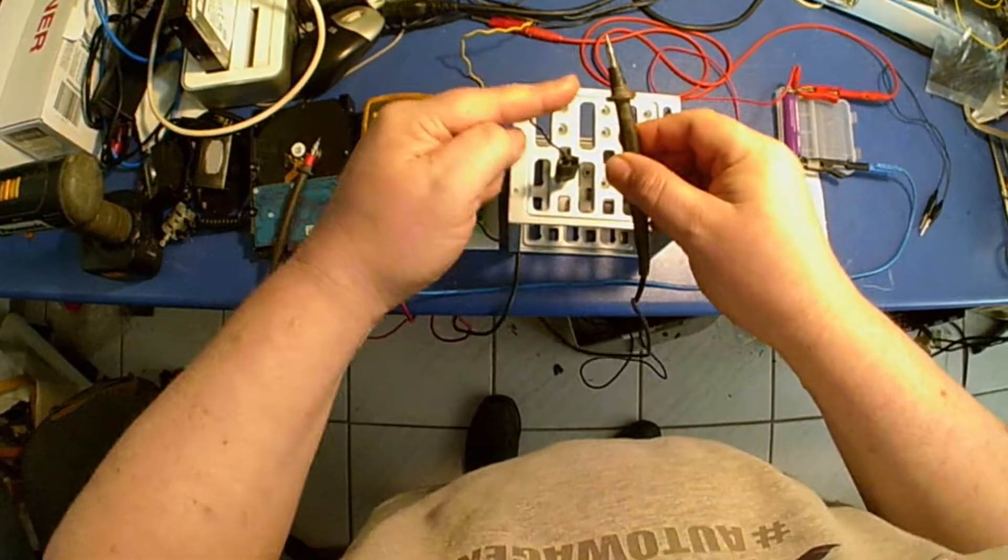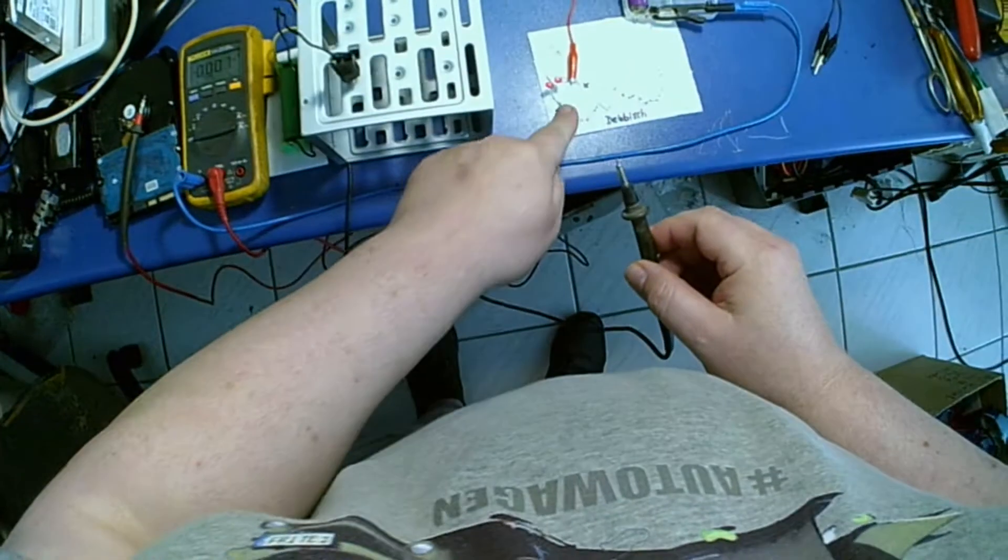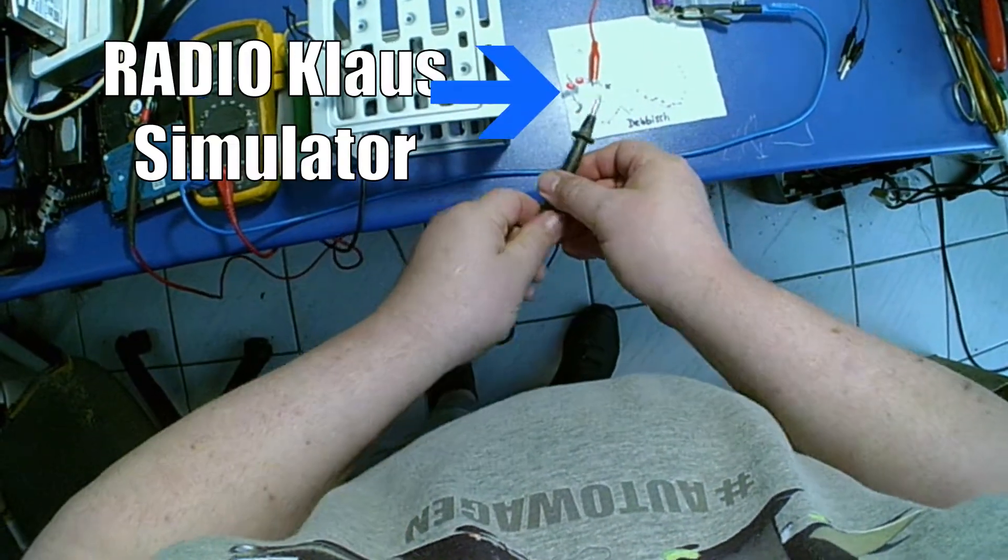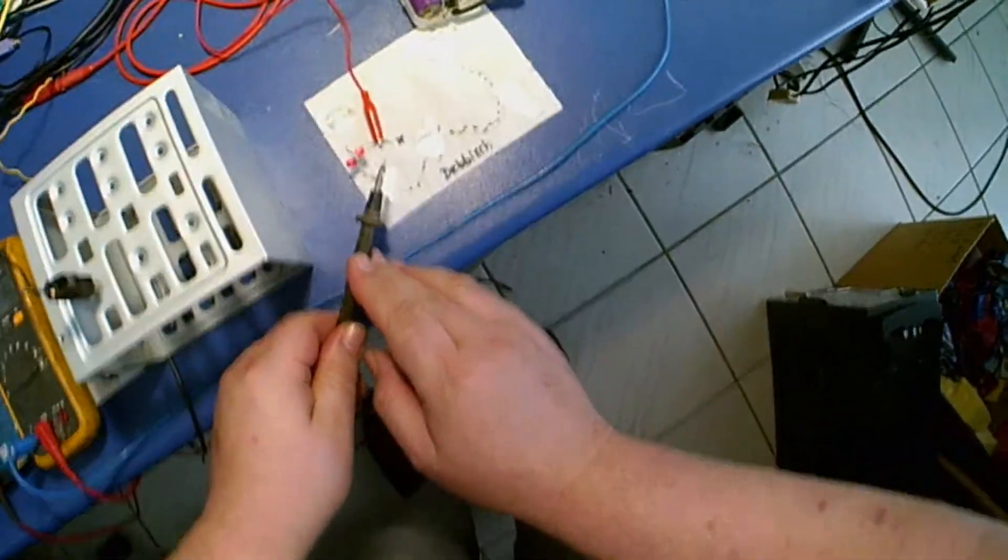We make now a short circuit between the Radio Klaus and a blank grounded point. Now see what happens.